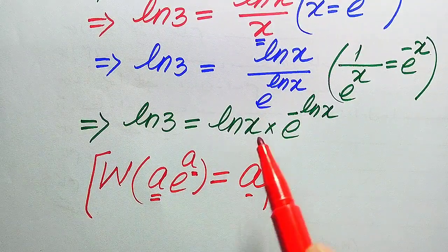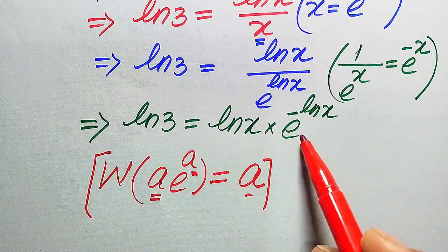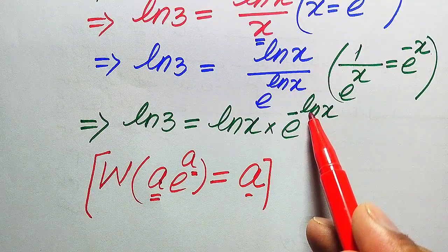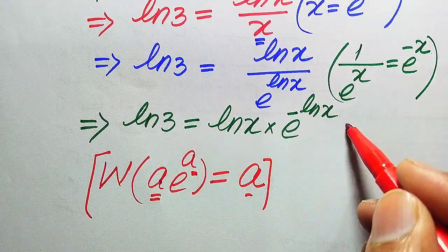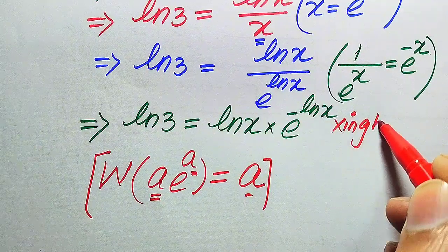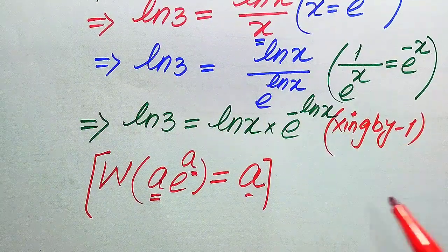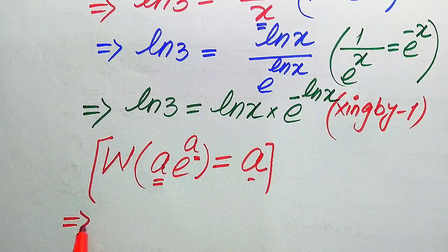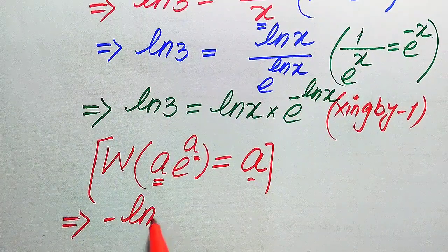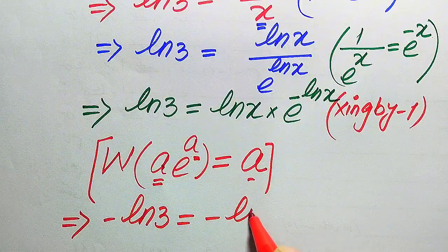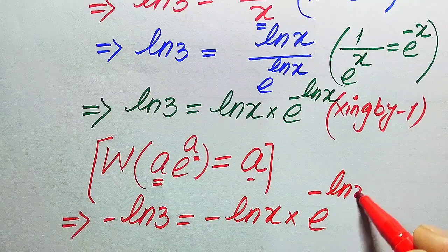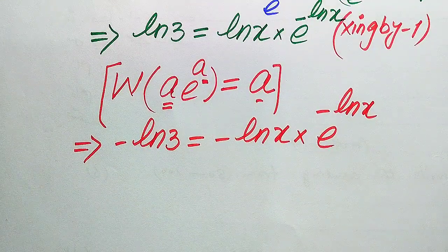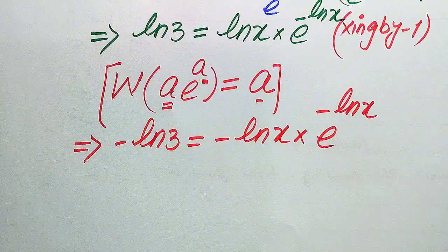For the Lambert W function, the exponent of e here is -logX, but we need the matching form. We multiply both sides by -1, giving us: -log(3) = (-logX)·e^(-logX).